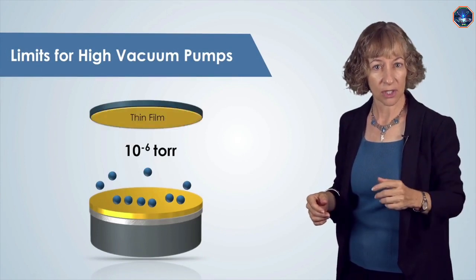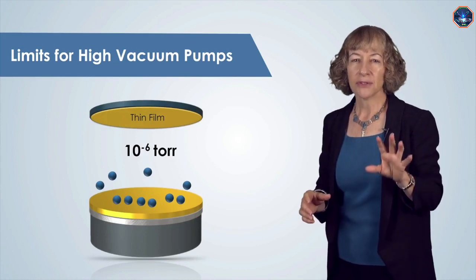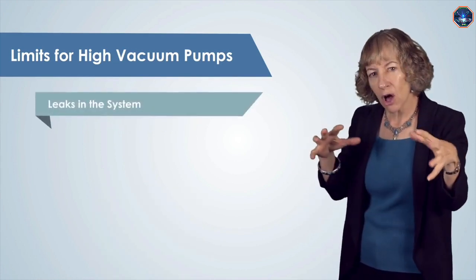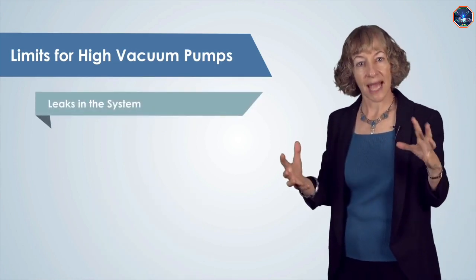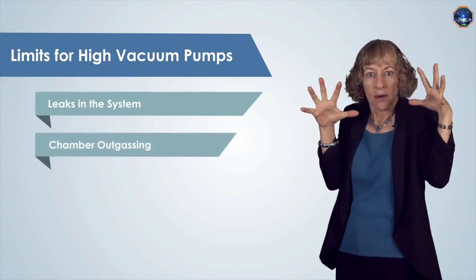High vacuum pumps can achieve 10 to the minus 6 torr for depositions, and they can achieve even lower pressures than that, but they're typically limited by small leaks in the system or in gaskets, or if the system out-gases, which means there are air molecules of trapped gas in the system—they tend to come off the chamber walls as the pressure decreases.